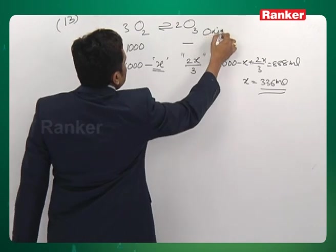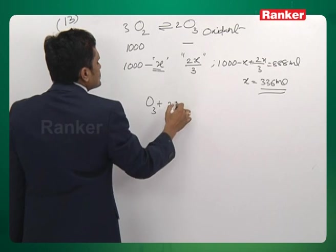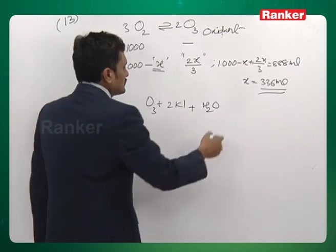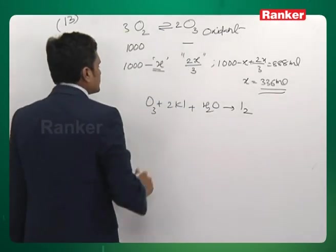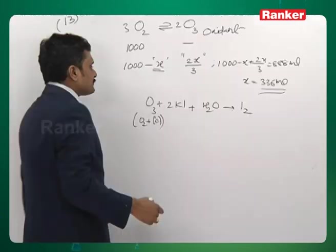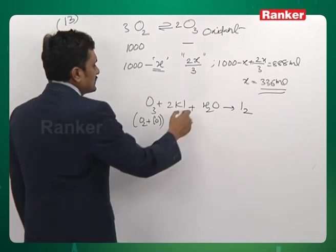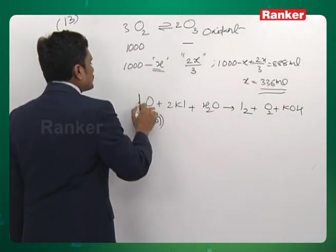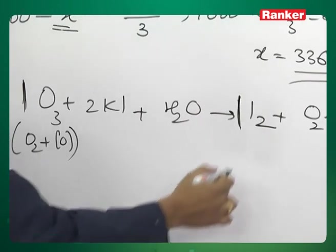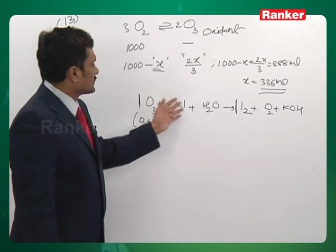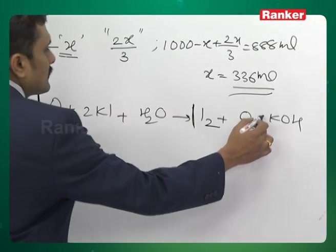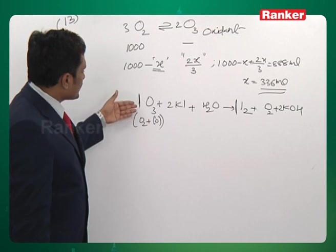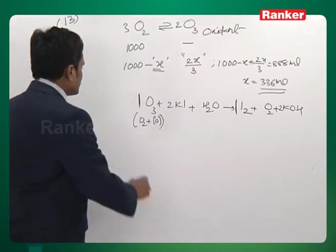Ozone is the better oxidizing agent. When the gas mixture is passed through KI, only ozone reacts with KI due to the presence of nascent oxygen, which oxidizes potassium iodide to I₂. Balancing the equation: for every 1 mole of ozone, 1 mole of I₂ is liberated along with 2 moles of KOH. The weight of iodine is found from the number of moles of ozone.